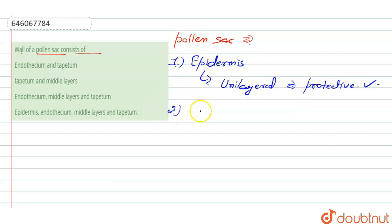After that, the second layer in the pollen sac is called the endothecium. This endothecium is present just below the epidermis and this layer is a layer of elongated cells which develops fibrous thickening.